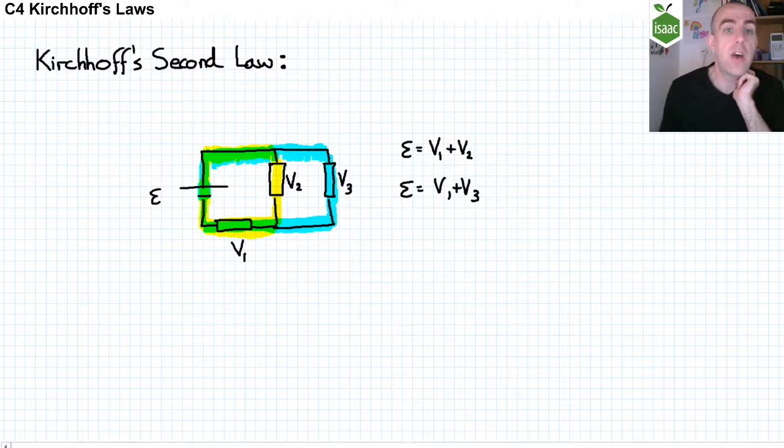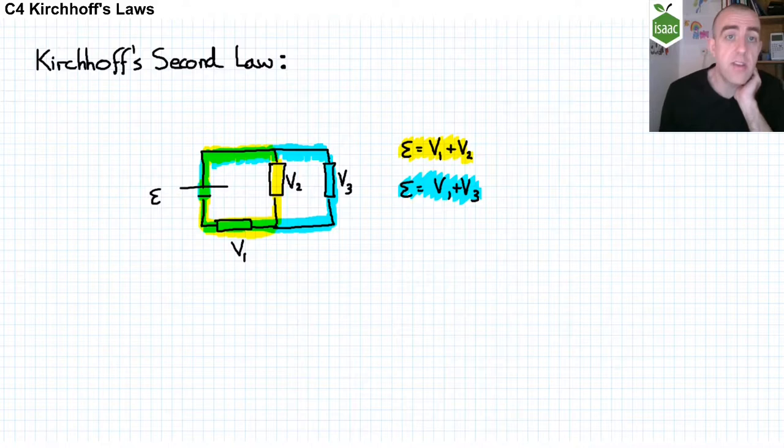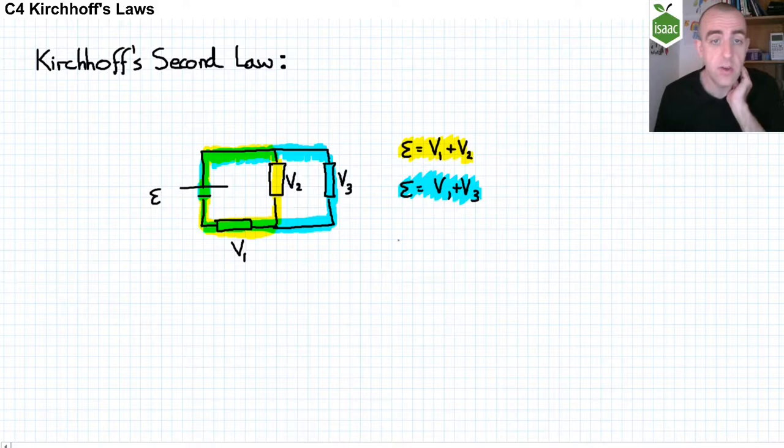Now, hopefully you can see that I can subtract one equation from the other, using the idea of simultaneous equations, to get zero equals V2 minus V3, for example. In other words, V2 equals V3. And this is another consequence of Kirchhoff's laws.